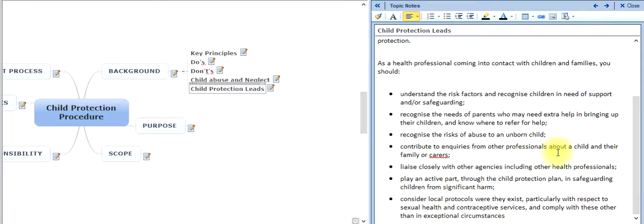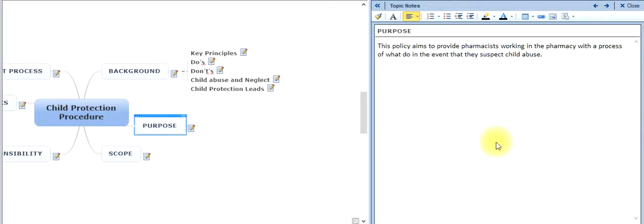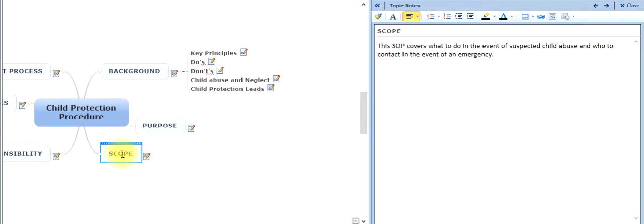For example, with EHC services, you might have to play a part in that as well. If somebody under the age of 12 comes to you for an EHC, alarm bells should be ringing. So the purpose really is to give pharmacists and all staff working under the pharmacist a process on what to do in the event of suspected child abuse. The scope of this particular SOP is what to do in the event of suspected child abuse.